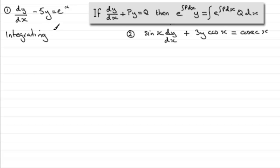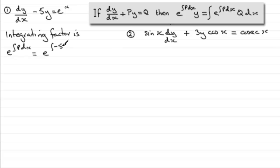The integrating factor is e to the integral of p dx. In other words, this is going to be e to the integral of p, which is minus 5. So we've got to integrate minus 5 with respect to x. The integral of minus 5 is just minus 5x, so we get e to the power minus 5x. We always ignore the constant of integration at this point.